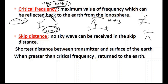The critical frequency is the maximum value of frequency at which reflection back to Earth still occurs. A good analogy: imagine filling a bucket with water — the critical level is just at the top where one more drop causes overflow. Similarly, if you go above the critical frequency, the wave either crosses the ionosphere or does not reflect back. The peak value is called critical — same concept applies here: maximum frequency that reflects back to Earth.